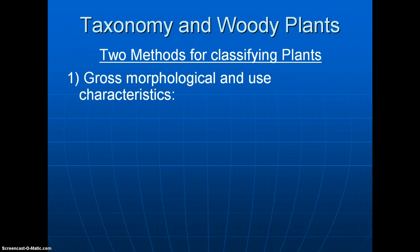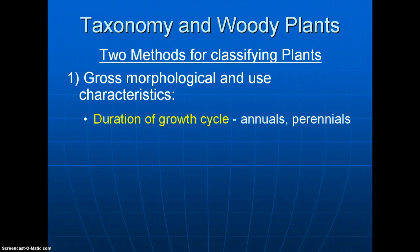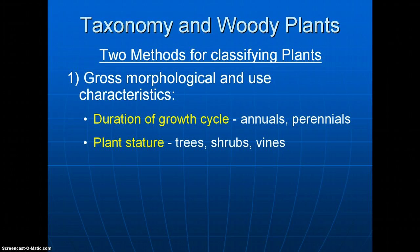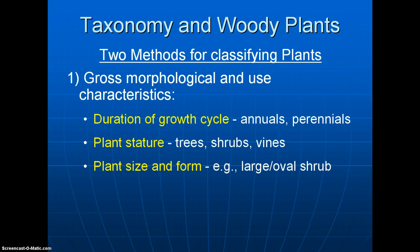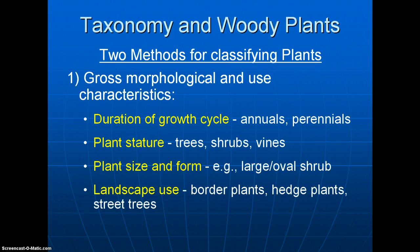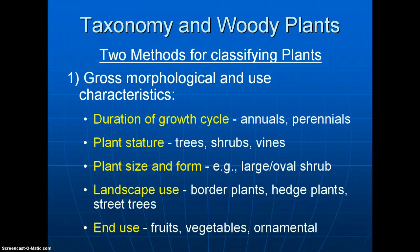There are two major methods for classifying plants. One is to look at fairly gross morphological characteristics — morphological meaning structural — and end-use characteristics. For example, we divide things into annuals and perennials, whether they grow one year or many years, or whether they're trees, shrubs, or vines. Or even their use — whether they're border plants, hedges, street trees, or specimen plants. We can also classify plants by use, whether as a fruit, vegetable, or ornamental plant.